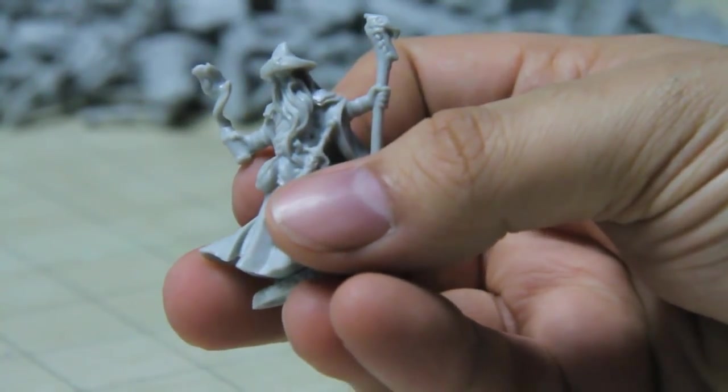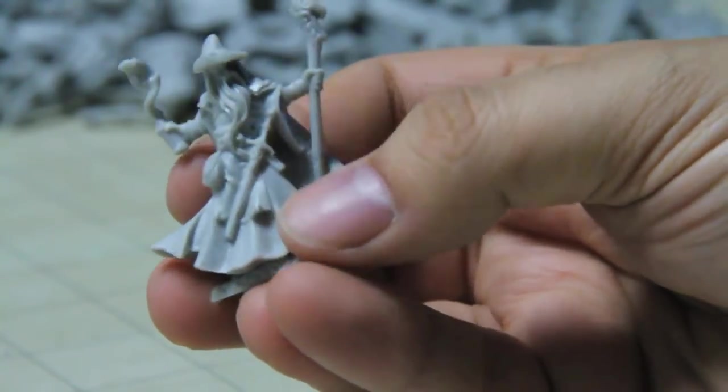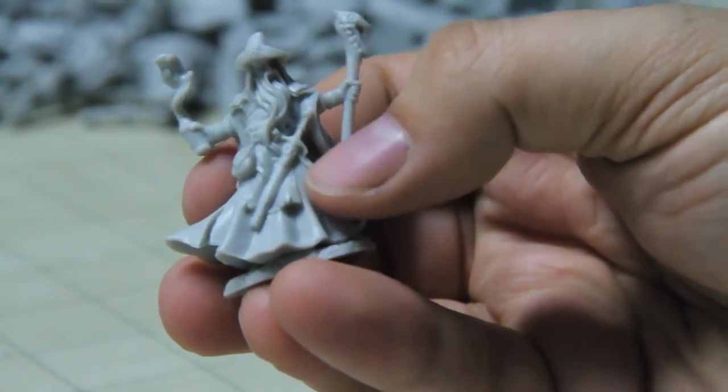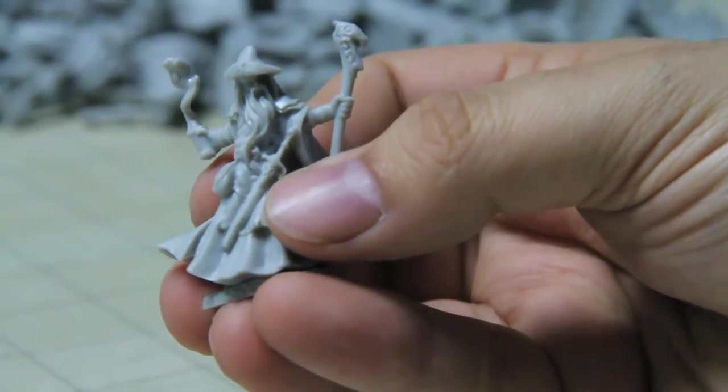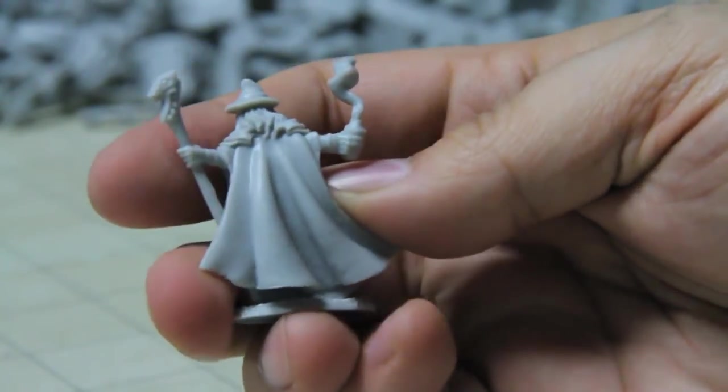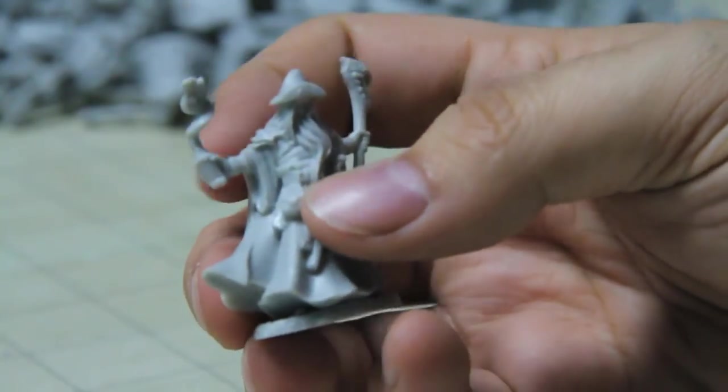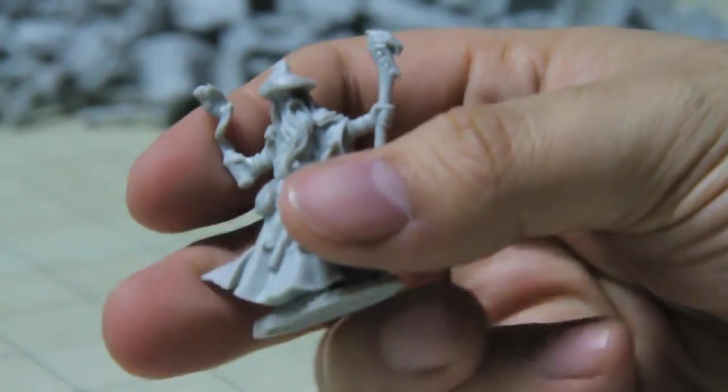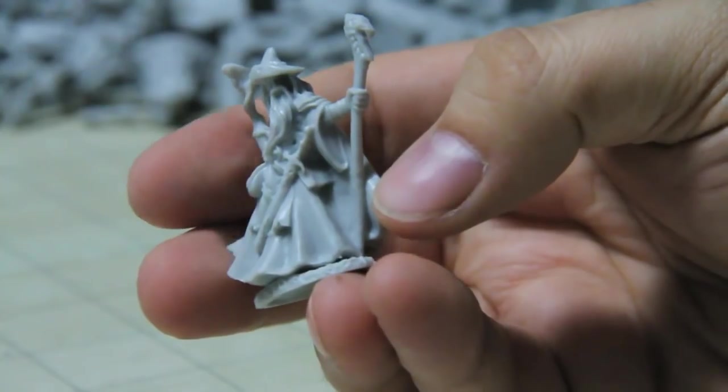Whereas this guy is definitely a wizard. He's got a sword, kind of a Gandalf kind of thing. But he's got a big staff there. And also, what looks like some sort of spell or something coming out of a jar in his other hand. So I'd say, yeah. Definitely a wizard on this one.